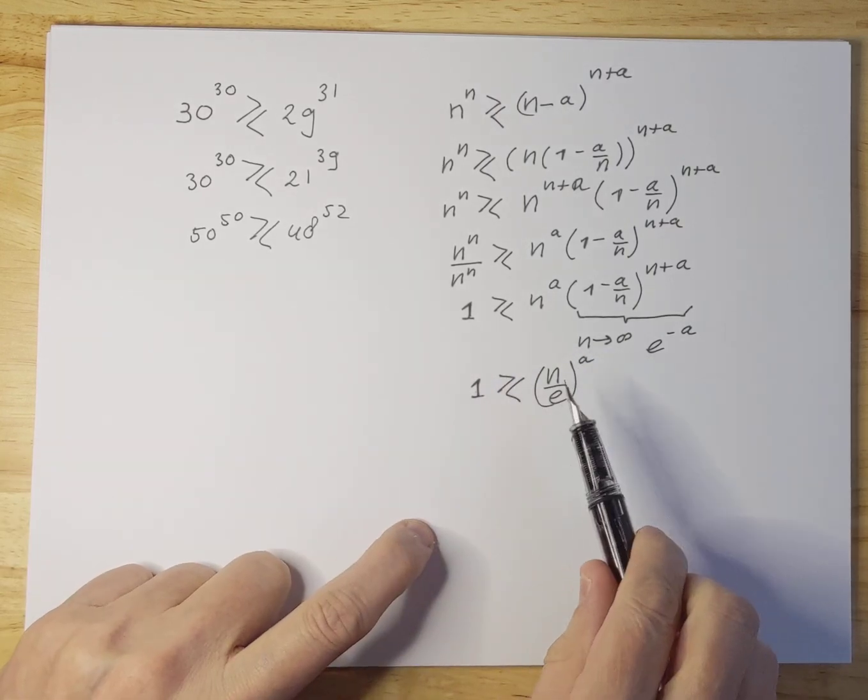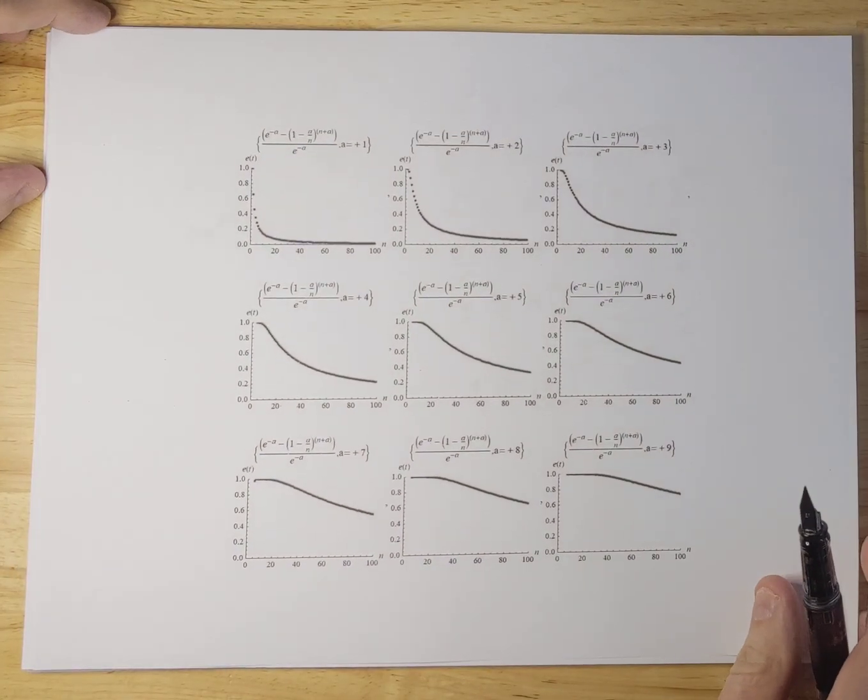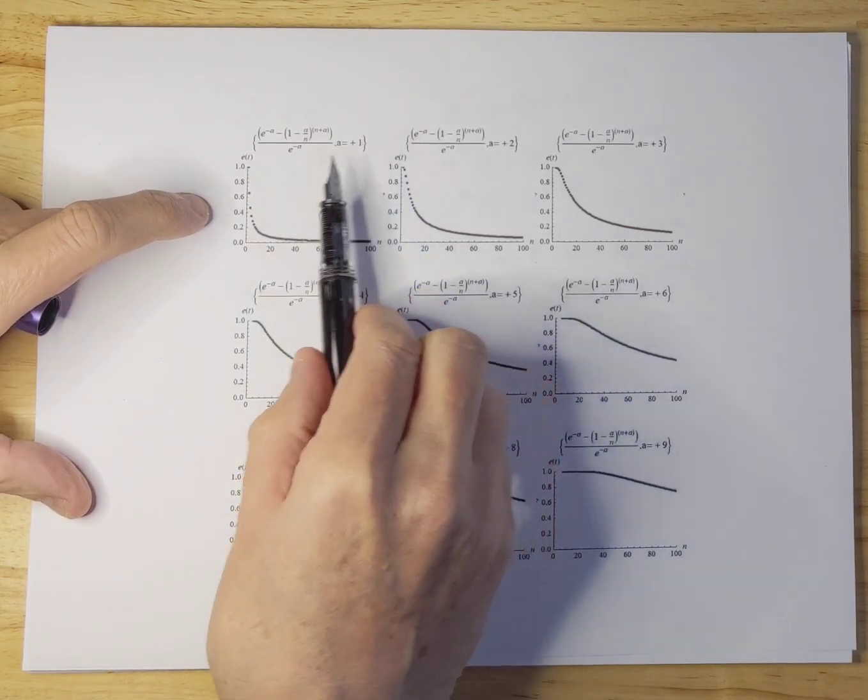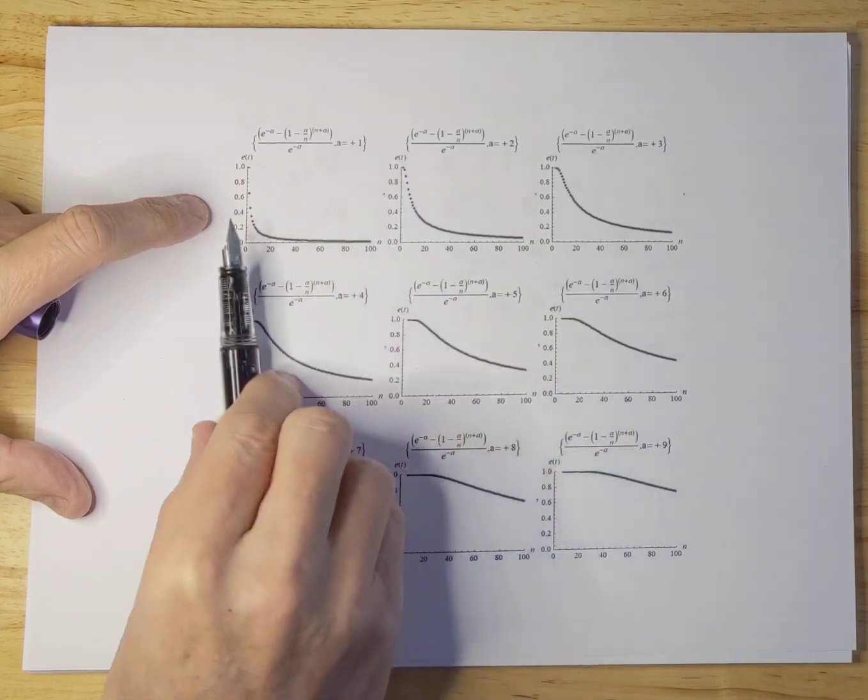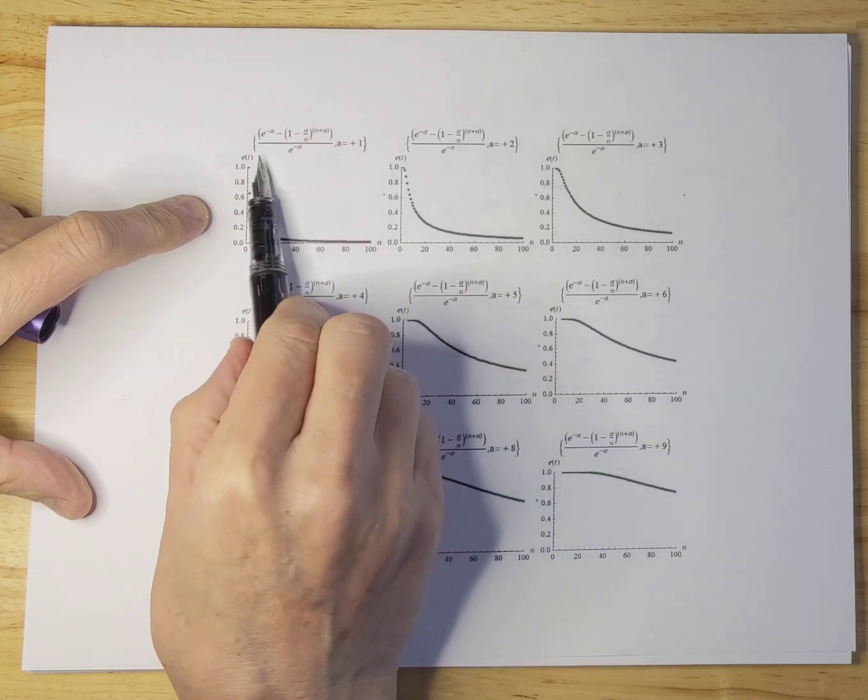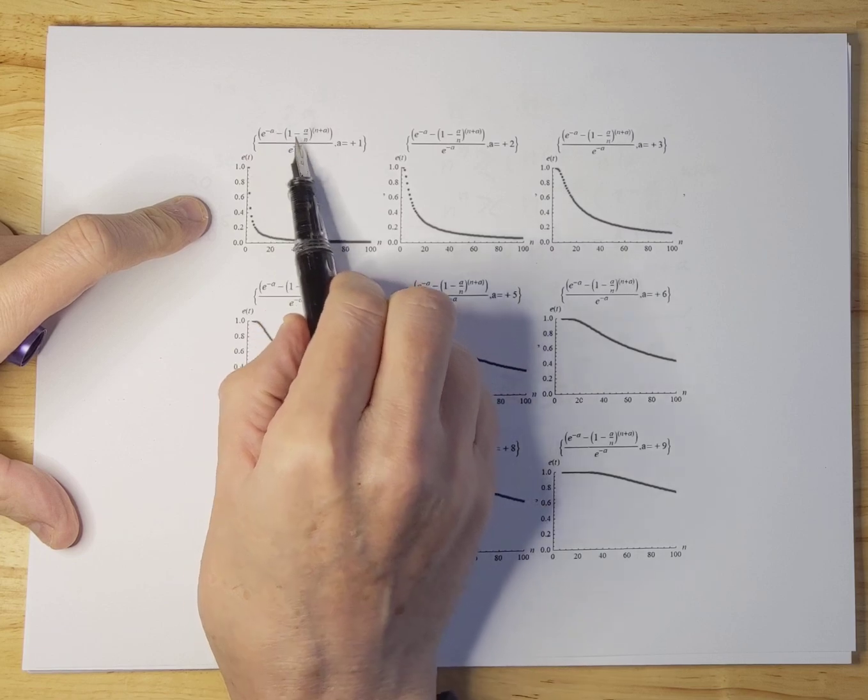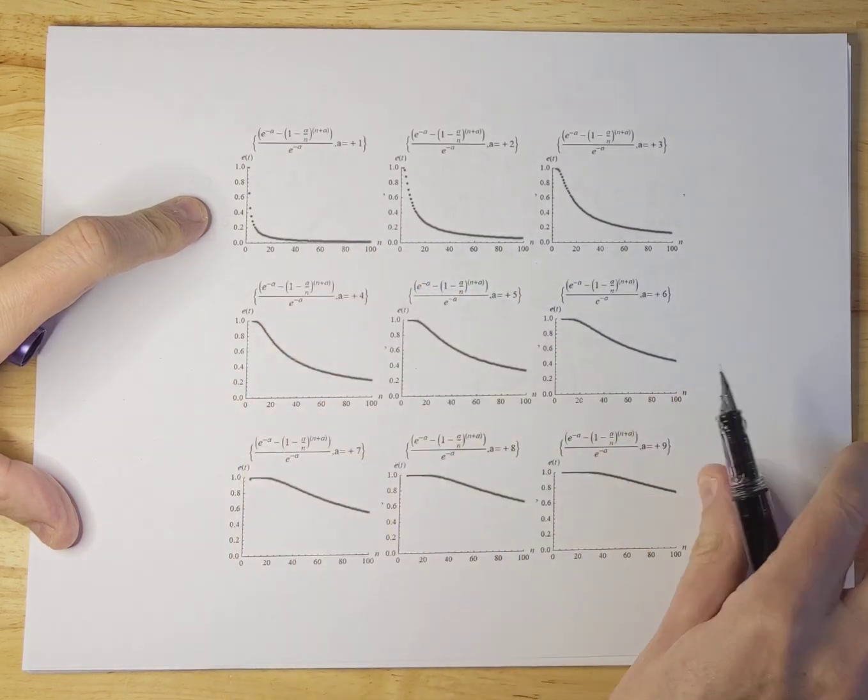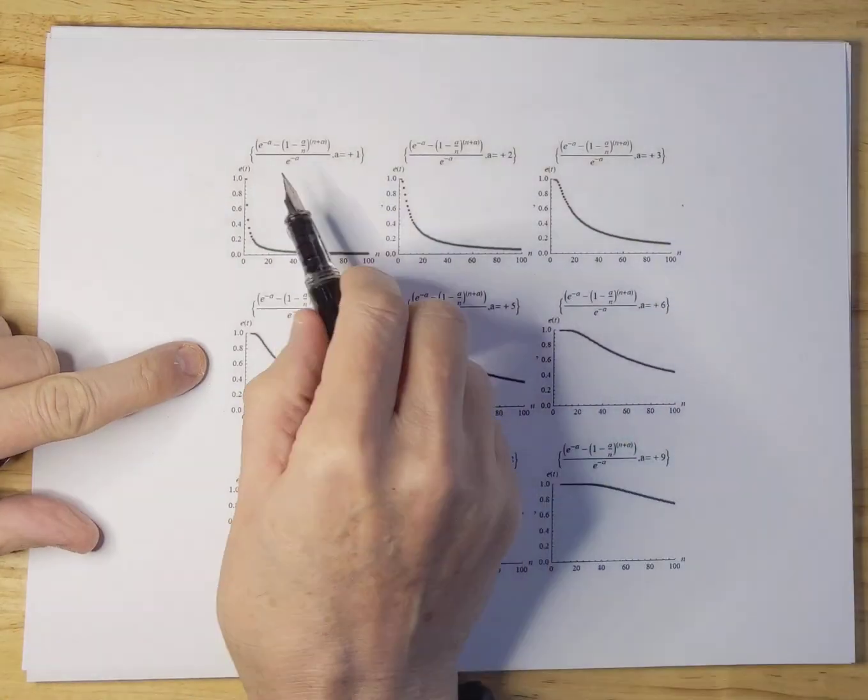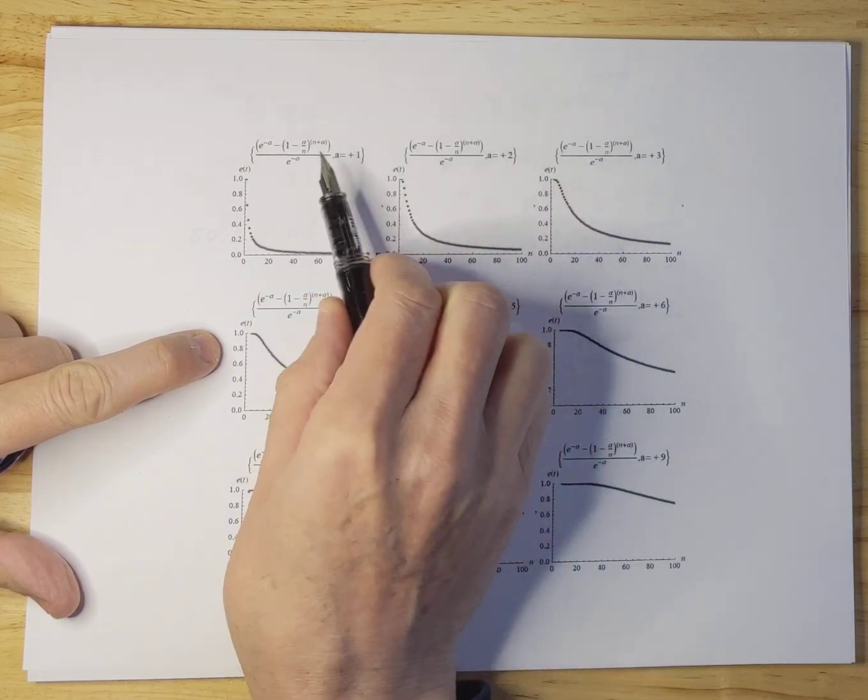So now before we go answer this question let me first show you some graphs and these graphs will show you how fast it converges with respect to n. So you see nine graphs here, n is on the horizontal axis here and the error which is the deviation between e to the power of minus a minus that function that I wrote down here, right, so minus this piece here divided by e to the minus a.